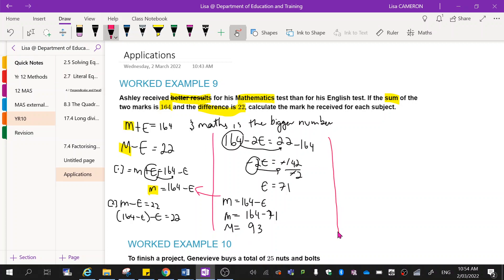Now I can check this by substituting both numbers in here and checking that gives me 164. Or I could check that I've got the same answer in both by doing some substitution in one of these other ones. So if I'd chosen to substitute into equation two here, it would have been m minus 71 is equal to 22. Take this over by adding 71. And I still end up with 93.